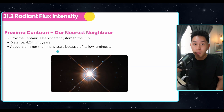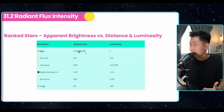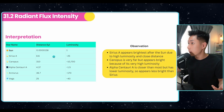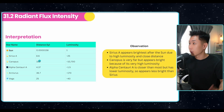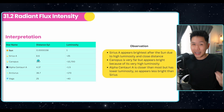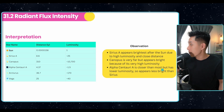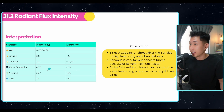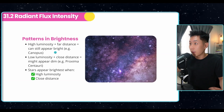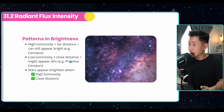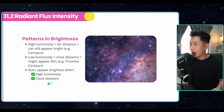Proxima Centauri appears dimmer than many stars because of its low luminosity. This table shows the rank of stars in terms of brightness, distance from us, and luminosity. Sirius A appears brightest after the sun due to high luminosity and close distance. Canopus is 310 light years away but appears bright because of its very high luminosity. Alpha Centauri A is closer than most but has lower luminosity, so it appears less bright. The conclusion: high luminosity plus far distance can still appear bright, and stars appear brightest when they have high luminosity and are close to us.